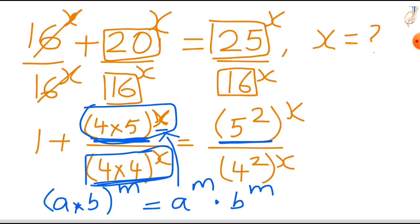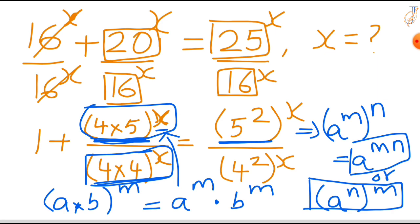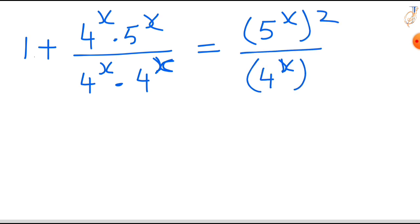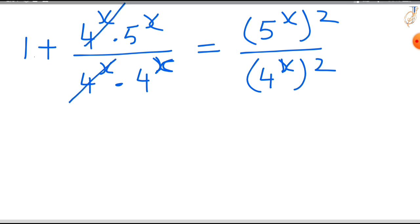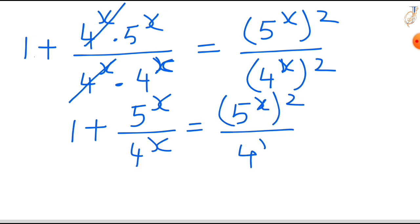In the RHS we have (5²)^x, which is in the form (a^n)^m, so it becomes 5^(2x), i.e., (5^x)². Similarly in the denominator, (4^x)². In the LHS, 4^x and 4^x get cancelled, leaving us with 1 + 5^x/4^x = (5^x)²/(4^x)².